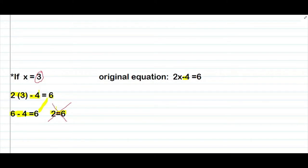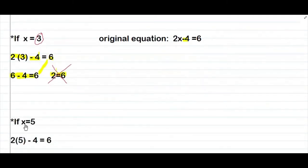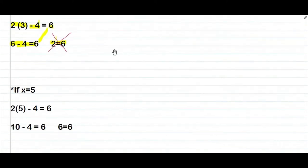Hanapin natin ngayon yung makapagpapatama sa equation. If x naman is equals to 5 — 2 times 5 then minus 4, equals to 6. Ang mangyayari sa atin is 2 times 5 is equals to 10, then minus 4, equals to 6. 10 minus 4 is equals to 6, then 6. So, equal siya — 6 equals to 6 talaga.